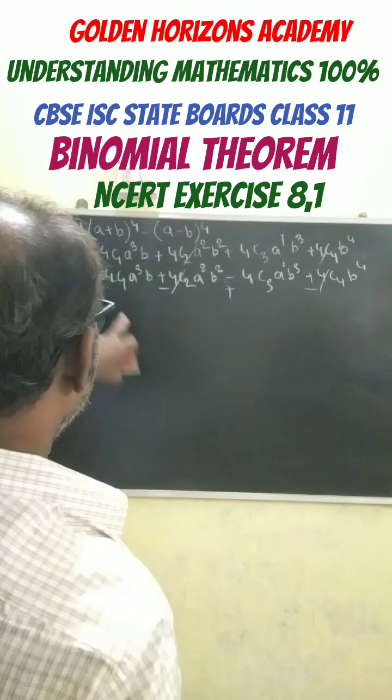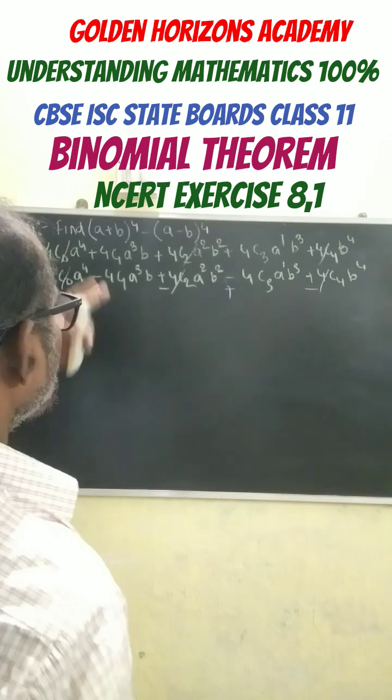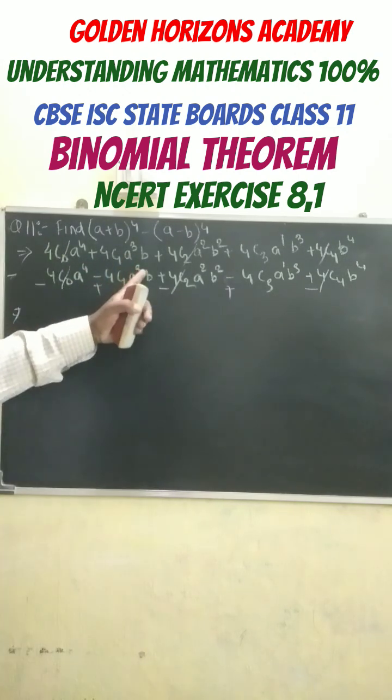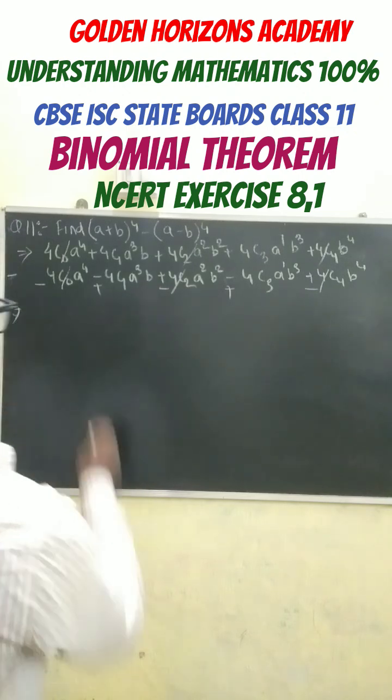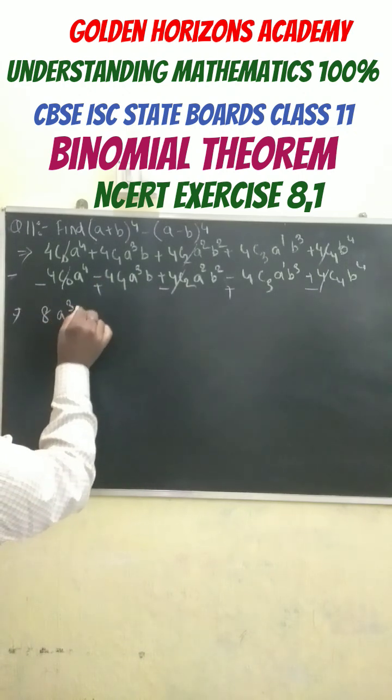Our final answer becomes this, that is 4, this one, so 4C1 means is 1, a^3 plus b, a^3b plus a^3b that we get here, 8a^3b, and here also we get 8ab^3.